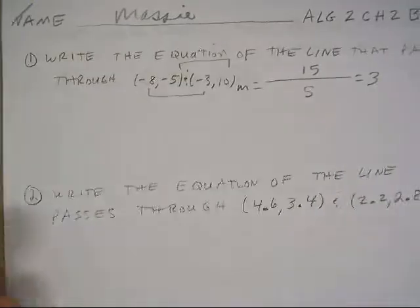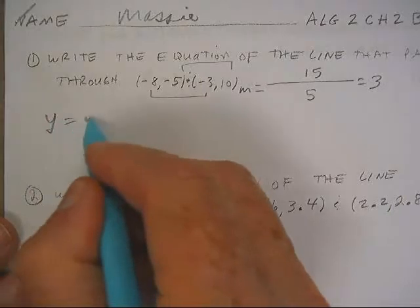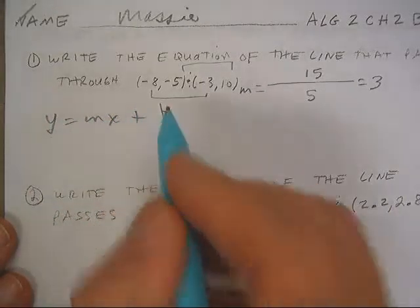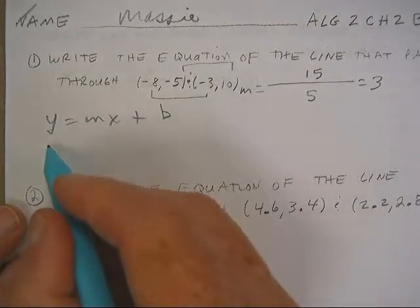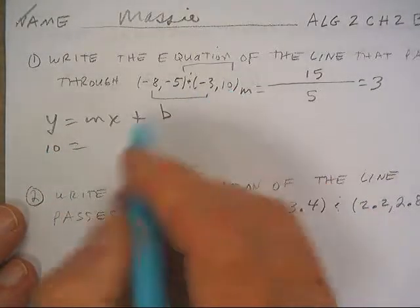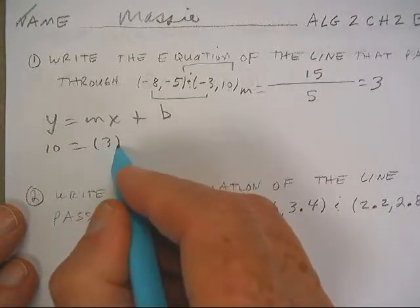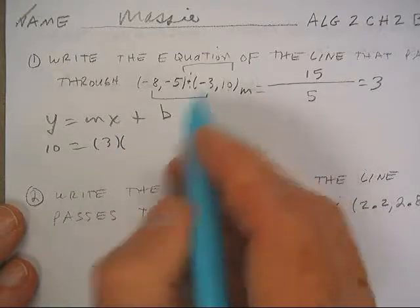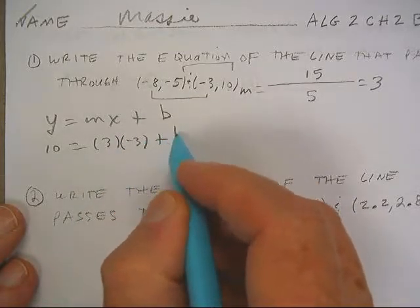So the slope was 3. And then we want to take the quintessential slope intercept form. Let's put y is 10, m is 3, x is negative 3 plus b.